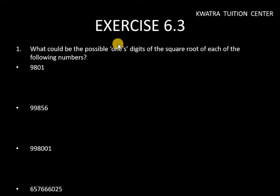First of all, we have the number 9801. Now let's see which digit it's ending with. We know that perfect square numbers can end with these digits: either 0, 1, 4, 5, 6, or 9. These are six possibilities.